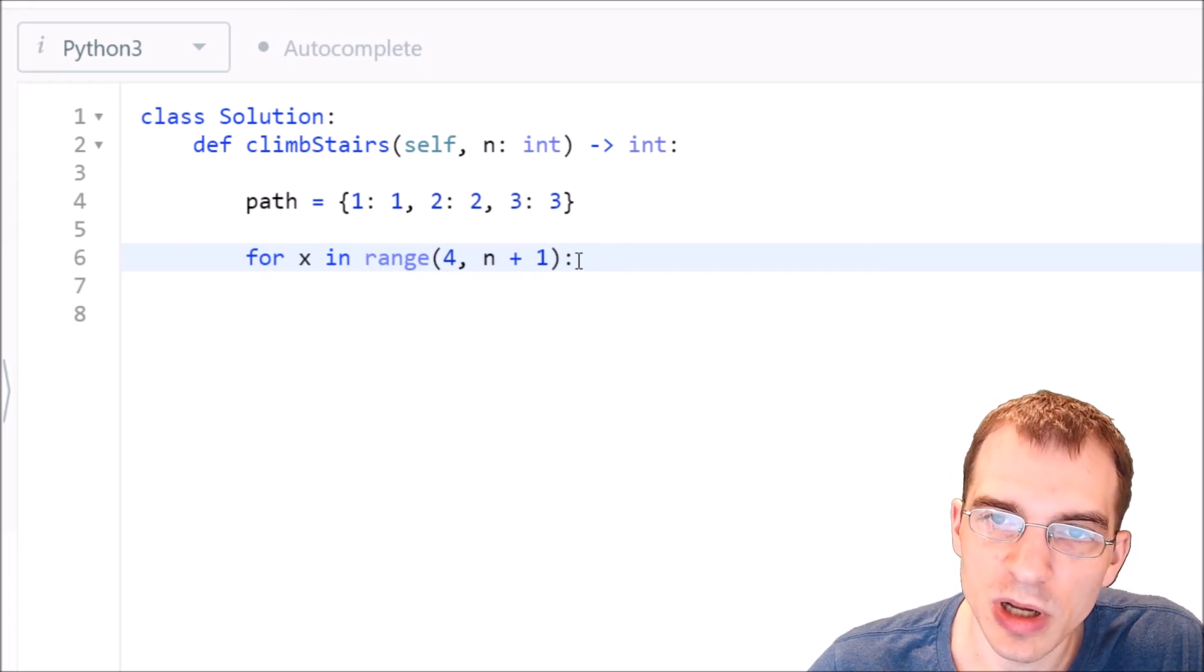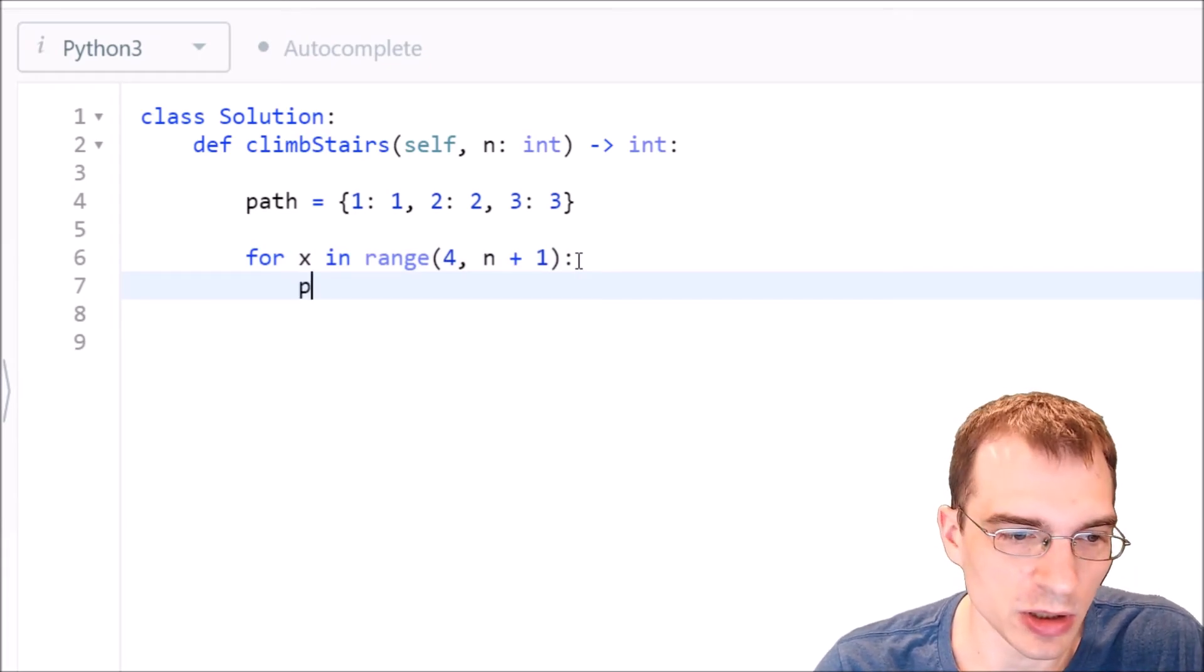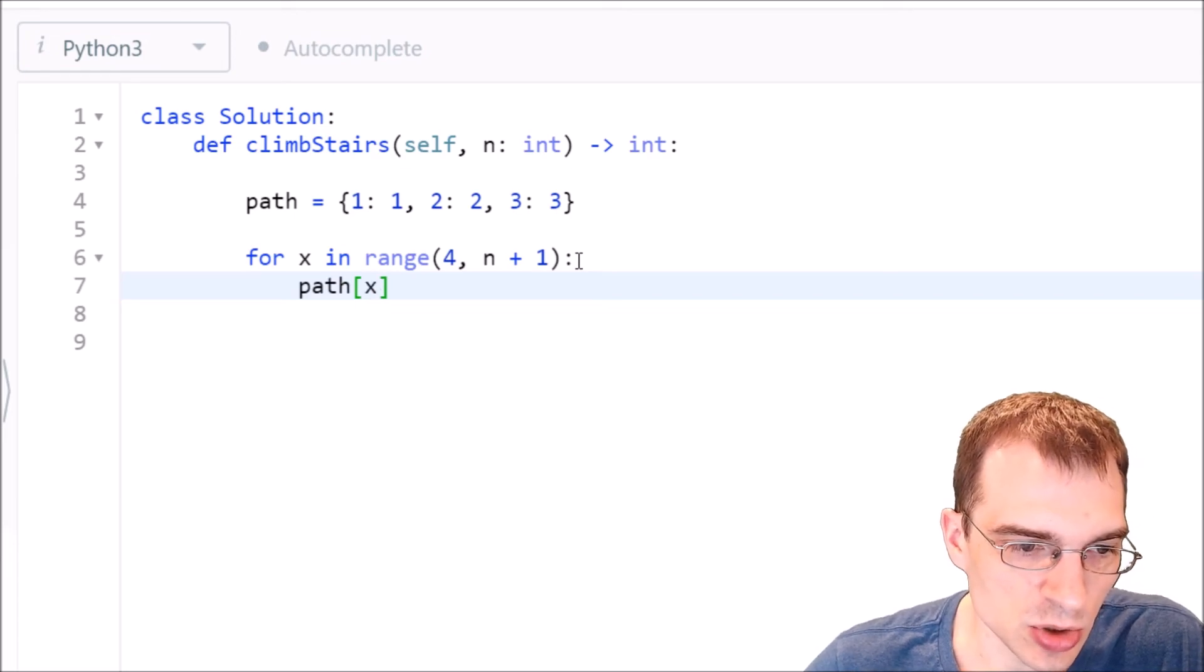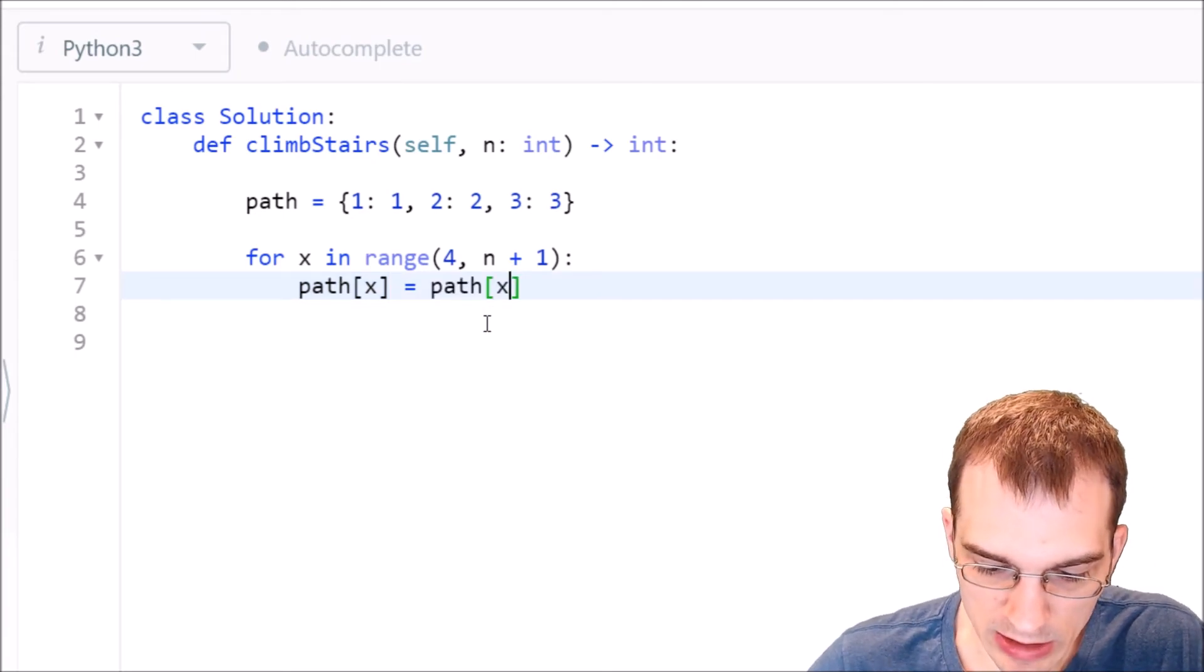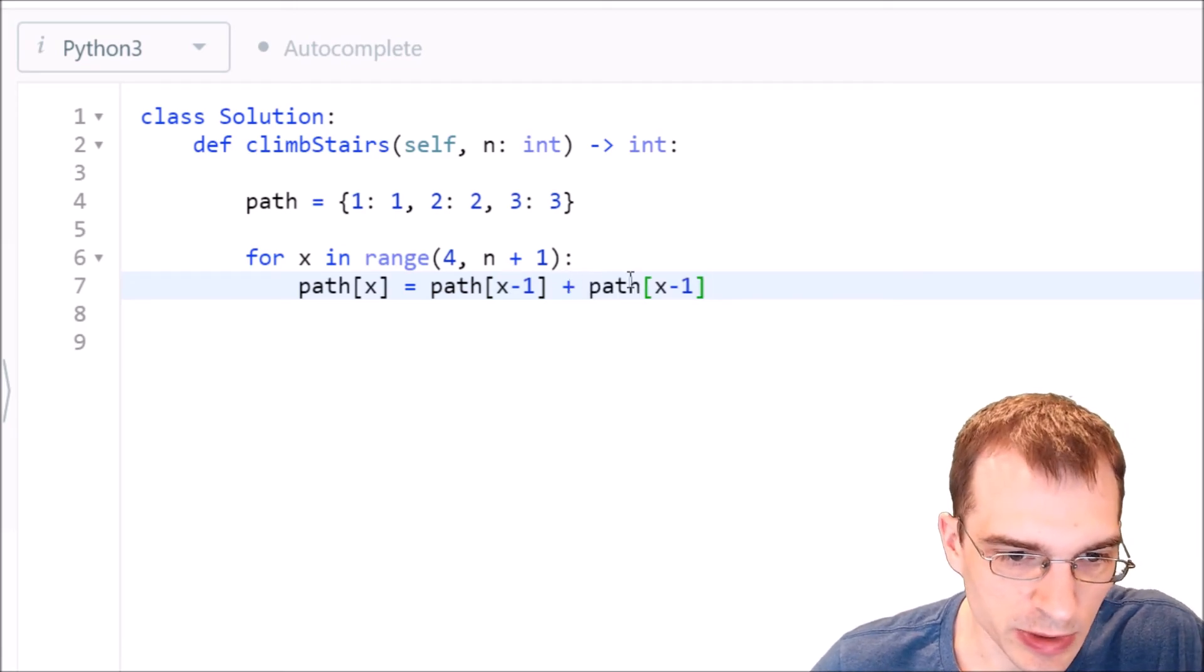And then we will store our new value in the dictionary so that we'll have it there to calculate the next one. So we have to store here path x. So this new stair value is going to be set equal to the previous two stair values, which would just be x minus one and x minus two.